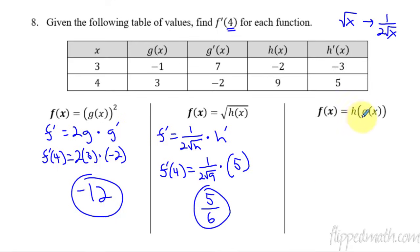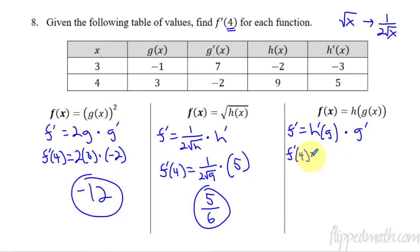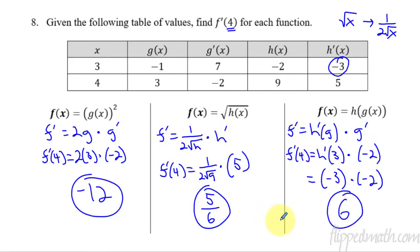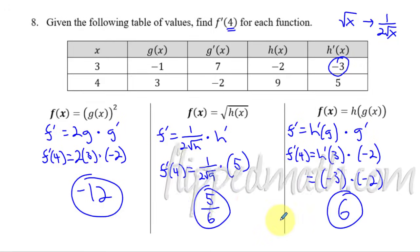Last problem has more chain rule. f prime equals h prime of g times g prime — that's the chain rule. f prime of 4 equals h prime of g of 4, which is h prime of 3, times g prime of 4 which is negative 2. From the table, h prime of 3 is negative 3. So that's negative 3 times negative 2, and therefore our answer is 6. You've got everything you need now for the chain rule — extremely important lesson. Please take your time, practice these well so you can rock that mastery check, and then we can continue on learning some new stuff. See you in the next lesson.